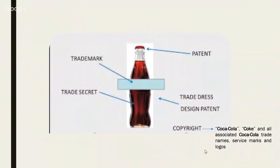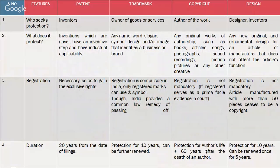As another example, a Coca-Cola bottle has multiple IP protections: the way it is sealed so gas doesn't come out is a patent; the Coca-Cola name and logo is a trademark; the content inside the bottle is a trade secret; the distinctive bottle shape has a design patent; and the way 'Coca-Cola' is written is covered by copyright.